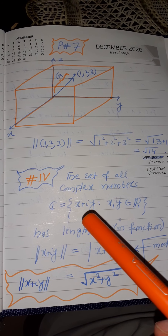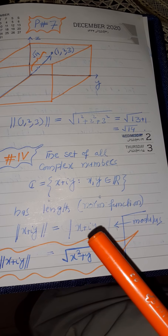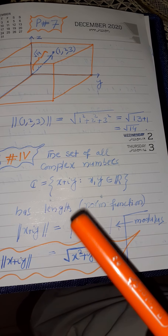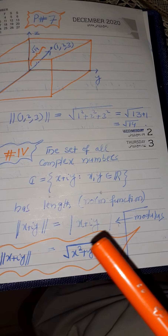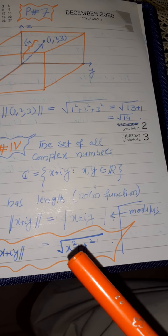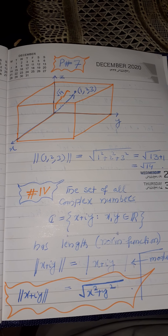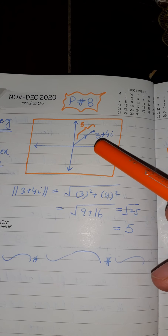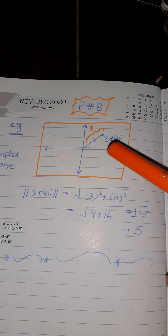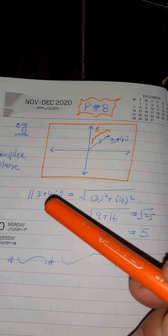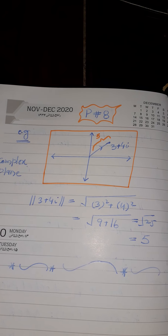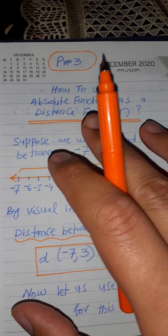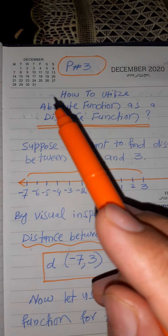For complex numbers, denoted by C, the norm function is defined such that the norm of x + iy equals the modulus of x + iy. The modulus serves as the norm or length function for complex numbers, defined as the square root of the real part squared plus the imaginary part squared. For example, for the complex number 3 + 4i, we plug it into the norm function and get the square root of 3² + 4², which gives the magnitude from the origin.